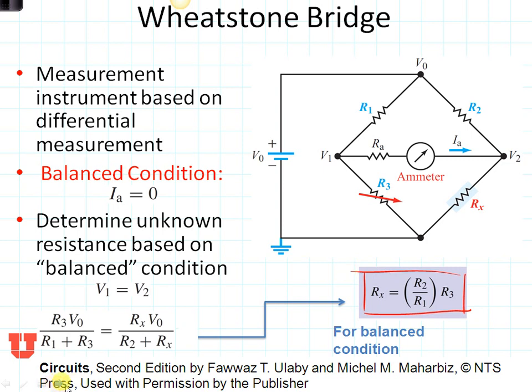If you look closely, you'll see that this circuit has two voltage dividers. One of them right here is between R1 and R3. So V1 is equal to V0 times R3 divided by R1 plus R3. That's right here.